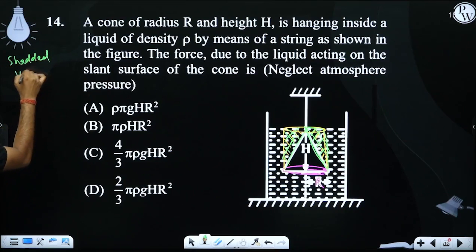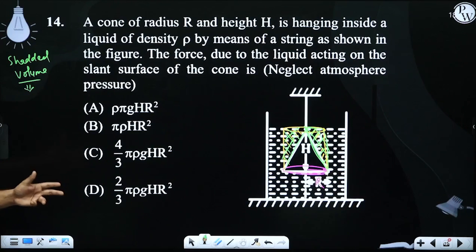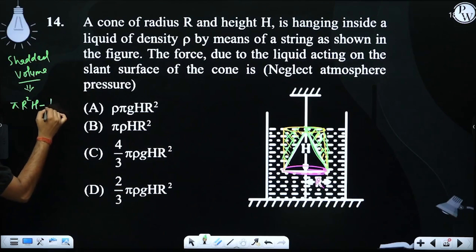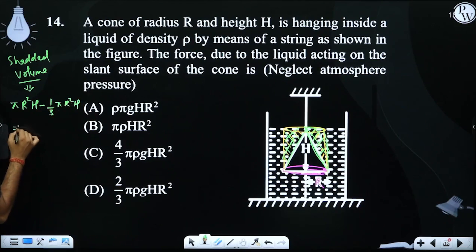The shaded volume will be the total cylinder volume minus the cone volume. Total cylinder volume is πR²H minus cone volume which is (1/3)πR²H, which means it is nothing but (2/3)πR²H.